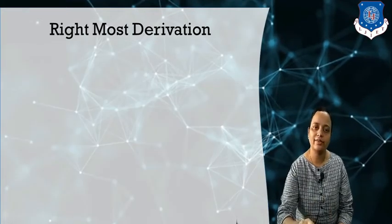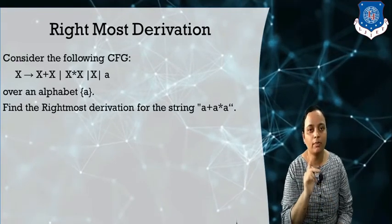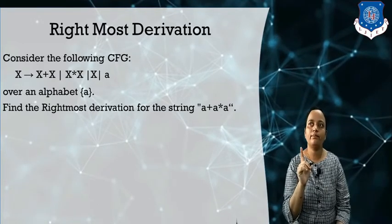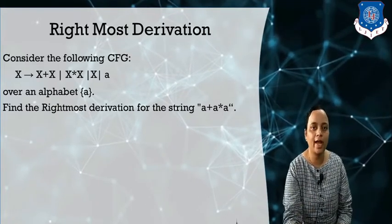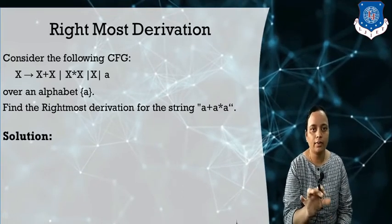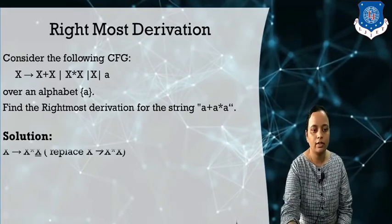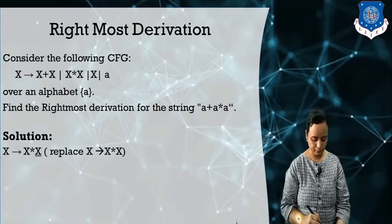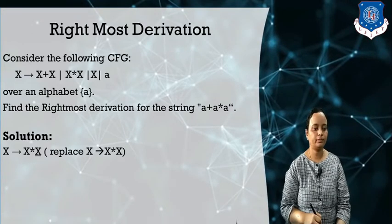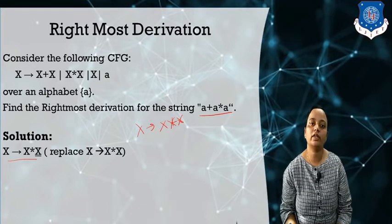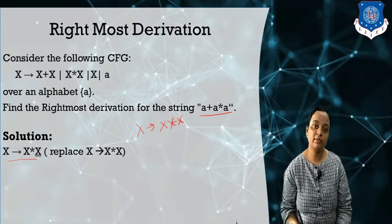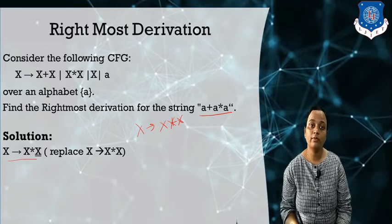Now let us understand the rightmost derivation. We use the same grammar and the same string, but the only difference from leftmost derivation is that in each step we are going to expand the rightmost non-terminal symbol. In derivation form: X derives X star X first. You have to pick those productions which are suitable for generating this string, and always expand the rightmost symbol in each step.